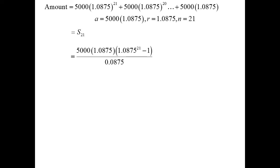The total investment is the sum of all that, and that's where we use our geometric series. The first term is 5,000 × 1.0875, reading it backwards. The ratio is 1.0875, and the number of terms is 21. We just substitute into our sum to N terms formula, and the answer is $299,604.86.